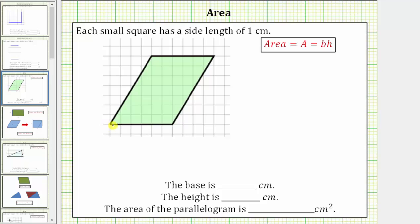Let's use this side as the base. Notice how the length of this side is one, two, three, four, five, six, and the units are centimeters. Let's label this side B for base equals six centimeters.